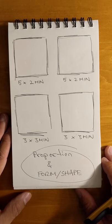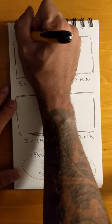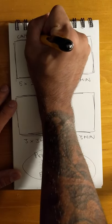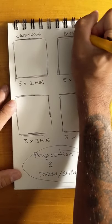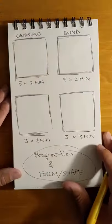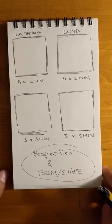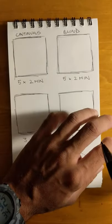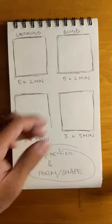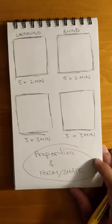You're going to use four different techniques and two of them are very traditional. So one is called continuous contour and the other one's called blind contour. I'm just writing the words continuous and blind. Contour is a fancy word for line. Essentially it means the outline of something. So the contour of my hand, or the contour of a cup or this sketchbook. Just think outline.